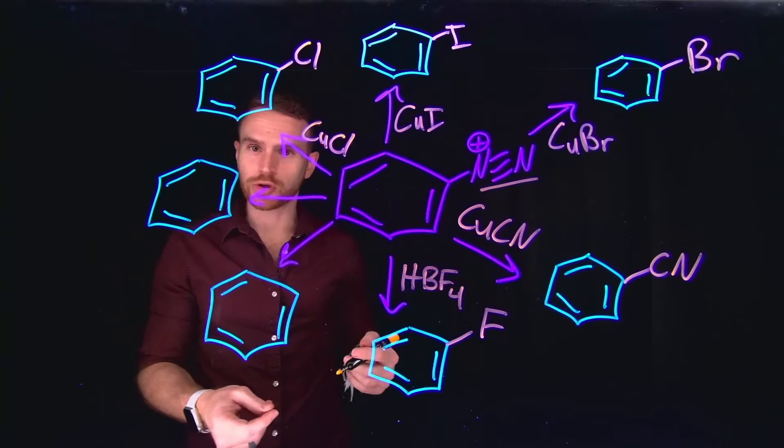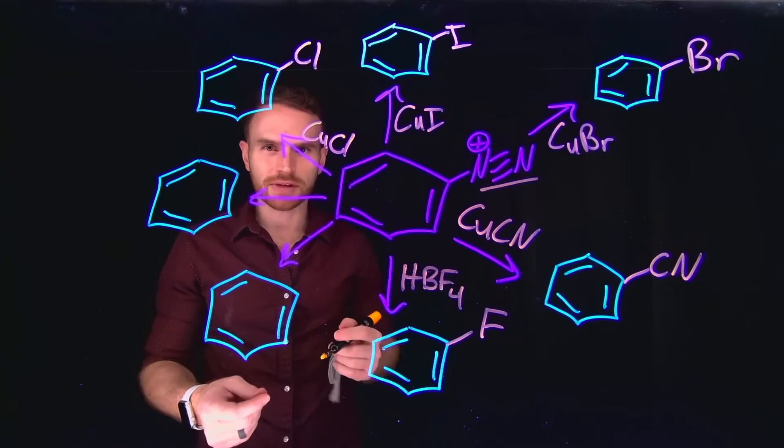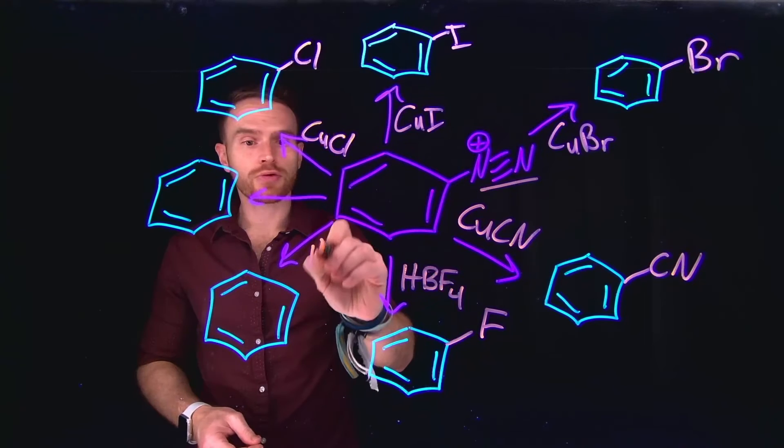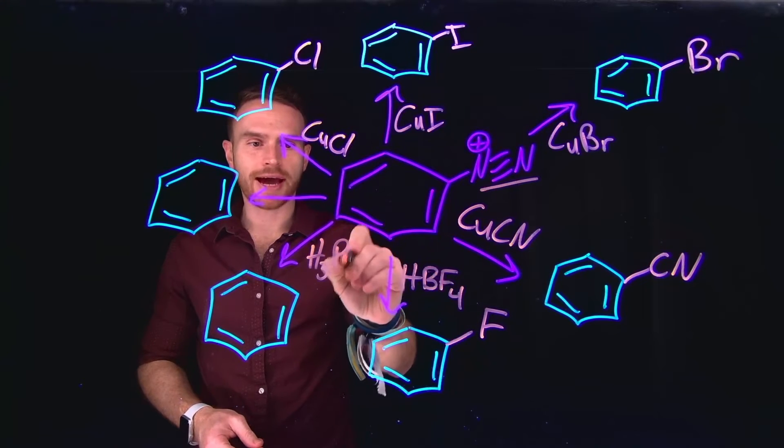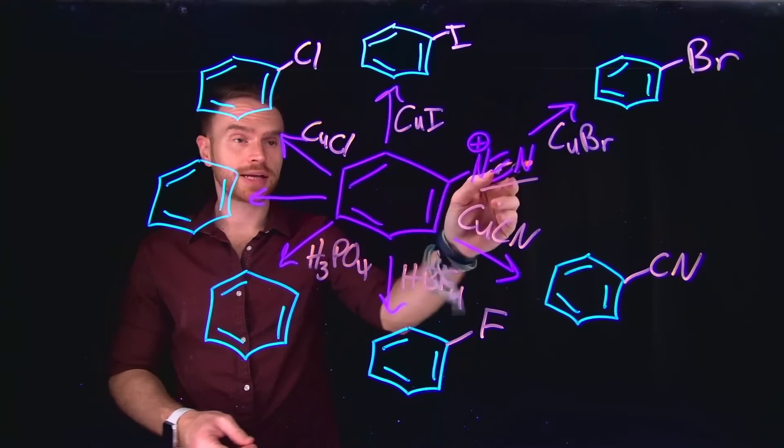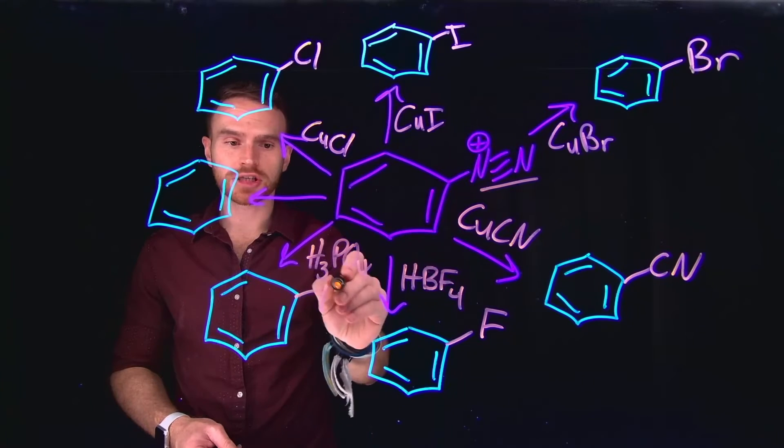Another example that I want you to consider that may seem relatively simple or straightforward is reduction. Through adding something like phosphoric acid, we can actually exchange that diazonium salt for just a simple hydrogen.